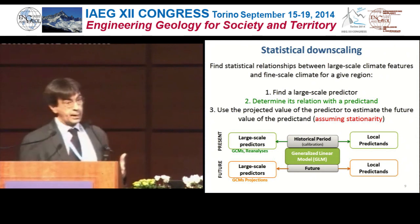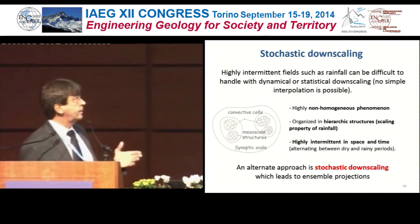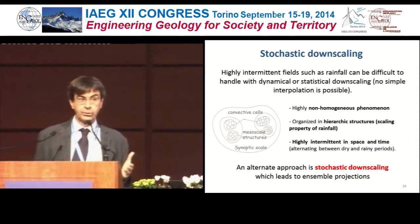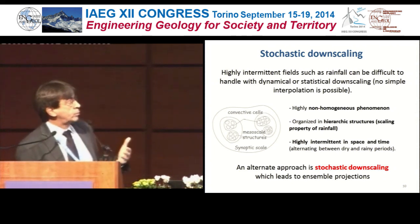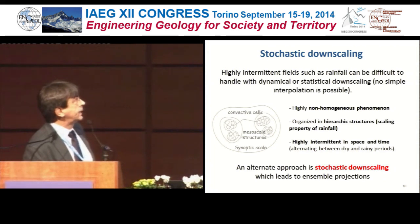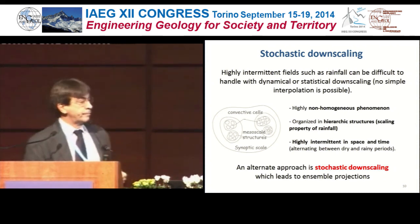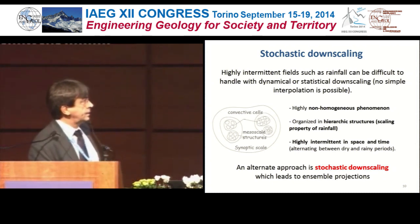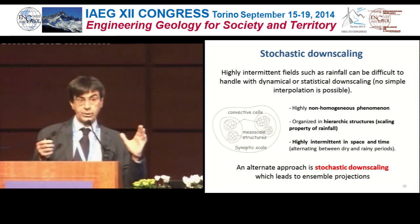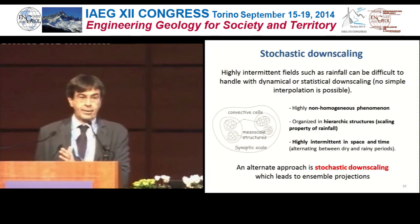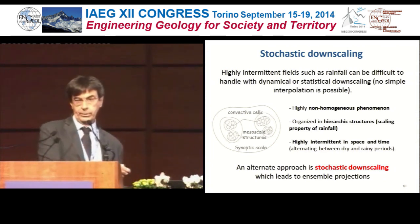There is also stochastic downscaling, developed mainly for rainfall. Rainfall is highly intermittent in space and time, so normal standard interpolation procedures do not work. Basically you do a stochastic intermittent interpolation using various methods — the first methods placed rain cells with a given shape, then people invented multifractal cascades, then simpler stochastic processes. This takes the GCM or regional climate model and generates a rainfall field compatible with the statistical properties at large scale and with the right statistical properties at small scale, as tested on study cases.